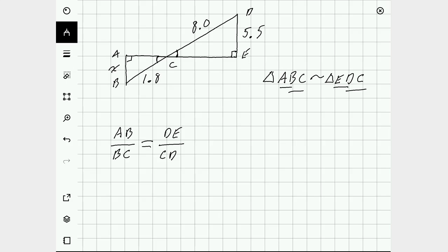So now that we know where our similarities are, we can start playing our matching game or just substitute in. AB is x, BC is 1.8, DE is 5.5, and CD is 8.0.